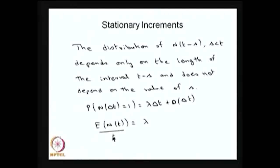This is the assumption we have taken in the car insurance problem. The average rate per unit day is going to be constant, and that is the assumption we have taken — it is going to be constant throughout the year and also at different times of a day. Whenever you have a Poisson process, the average rate is going to be a constant because of the stationary increment.